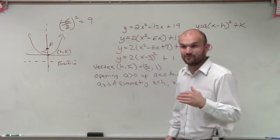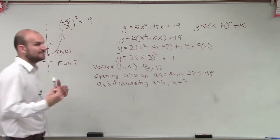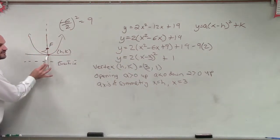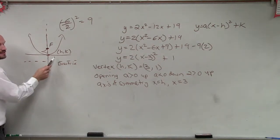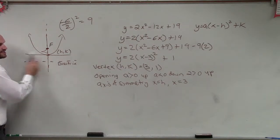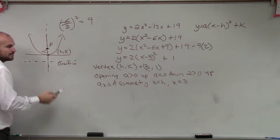1 divided by 4a. So if I want to find the focus, remember, we're adding the focus to what coordinate? Since it's going up, we're adding it to what point of our h comma k? We're adding it to our what? Well, if I add it to the h, it's going to go left or right. So I want to add it to the k, which will shift it up and down.